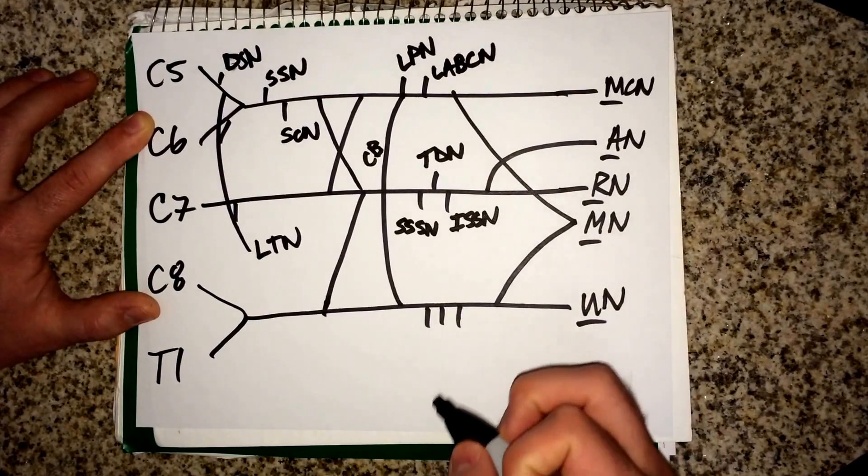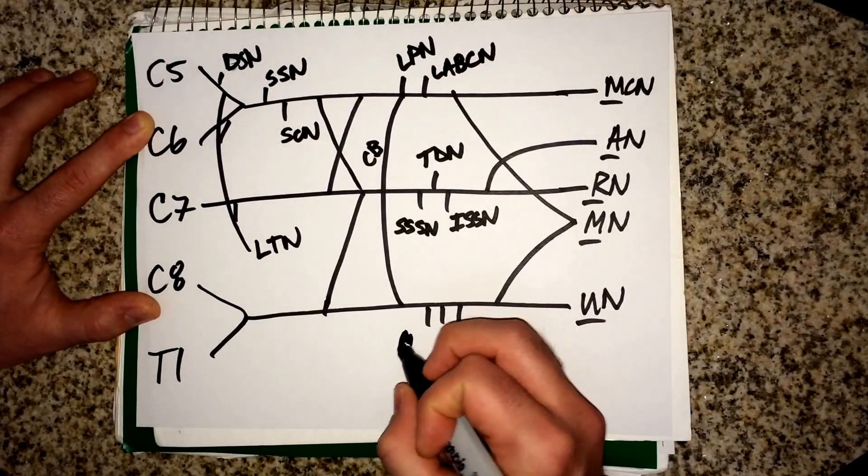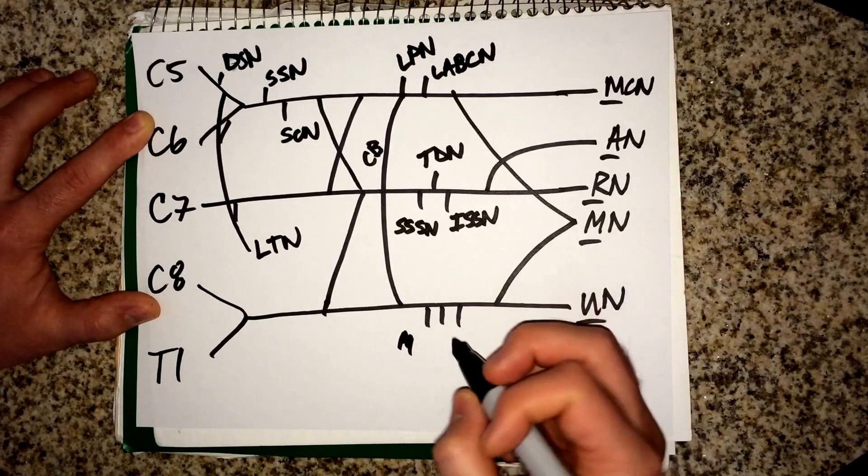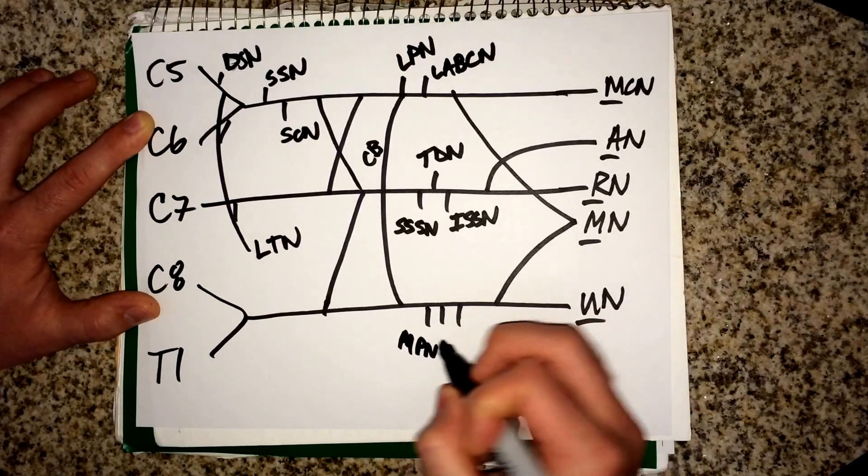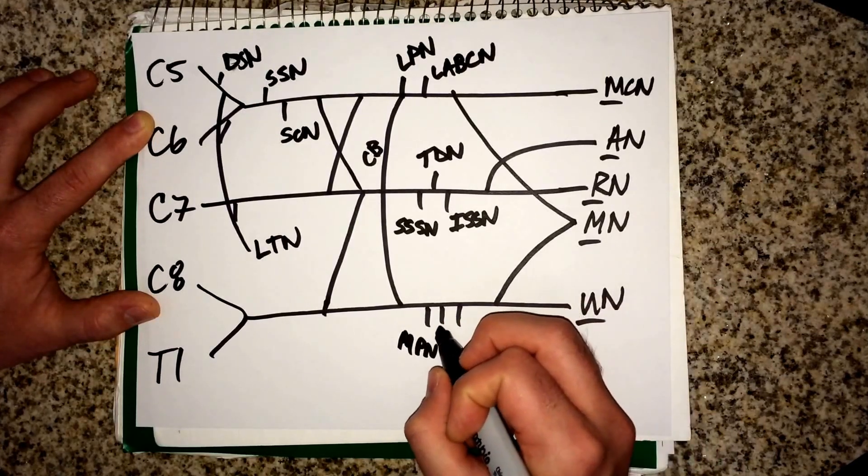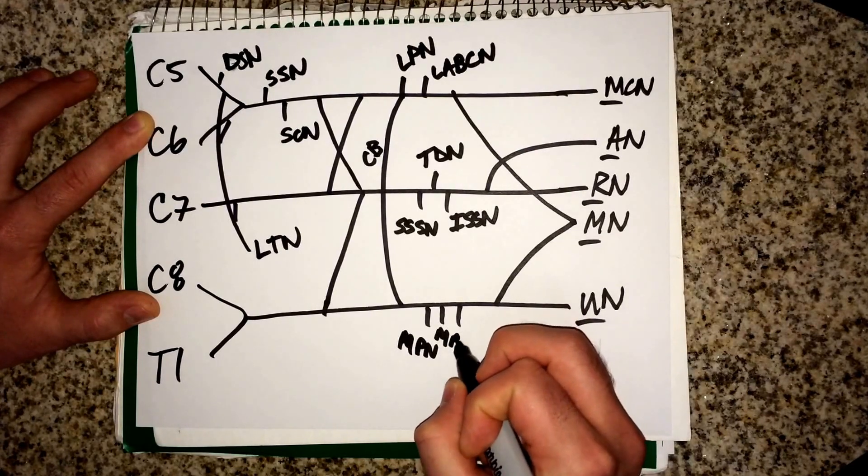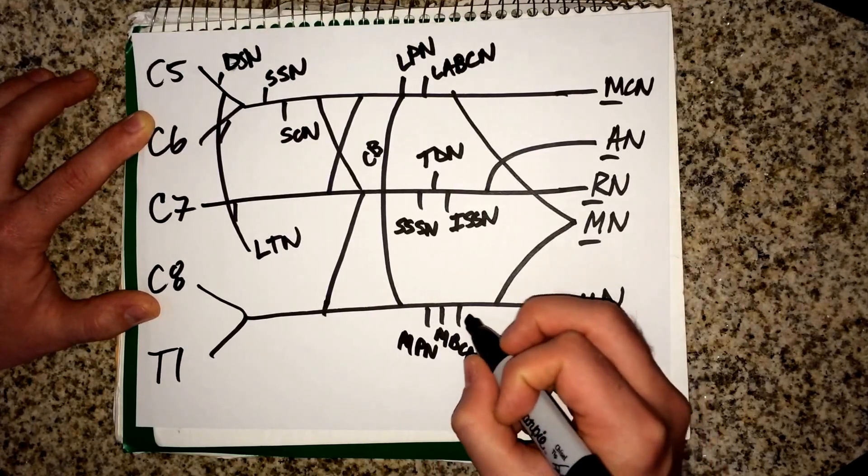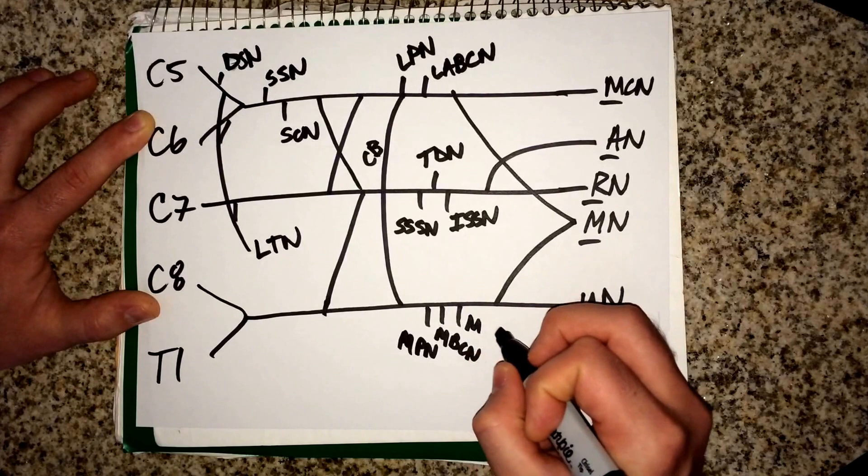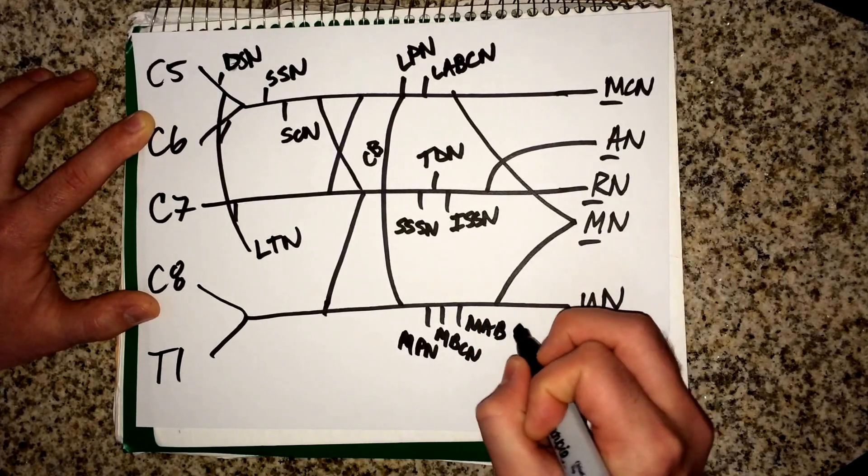These three that come down. This is your medial pectoral nerve. The one next to it is your medial brachial cutaneous nerve. And this one is your medial antebrachial cutaneous nerve.